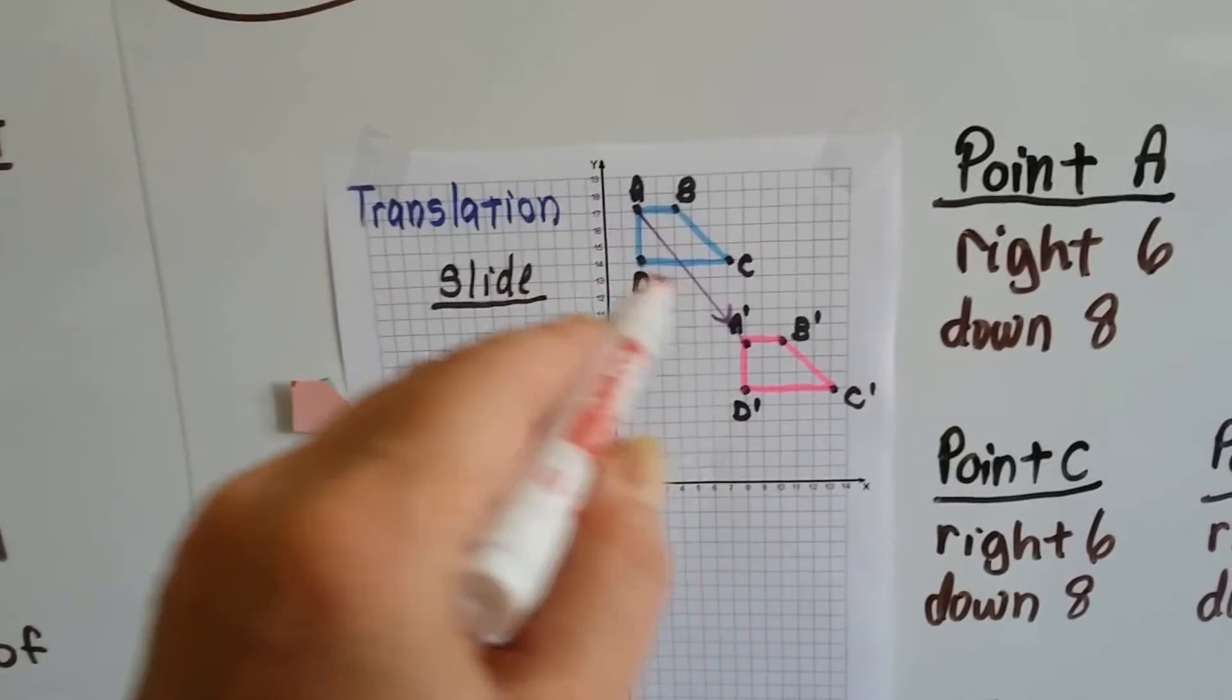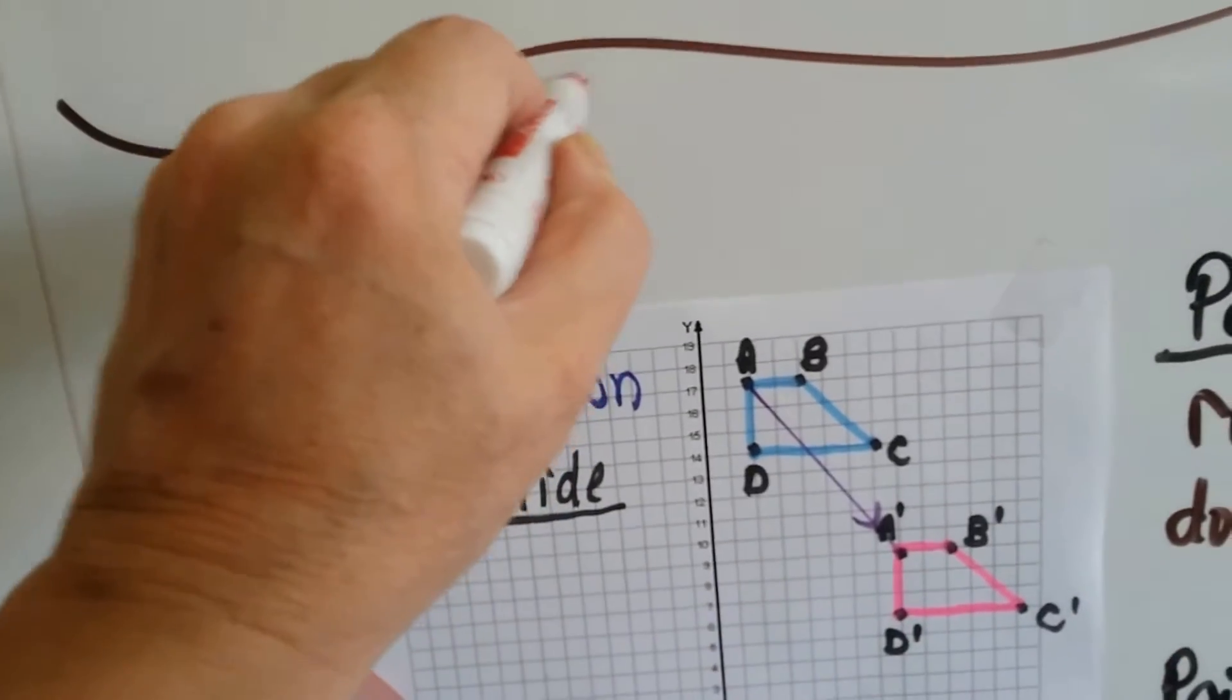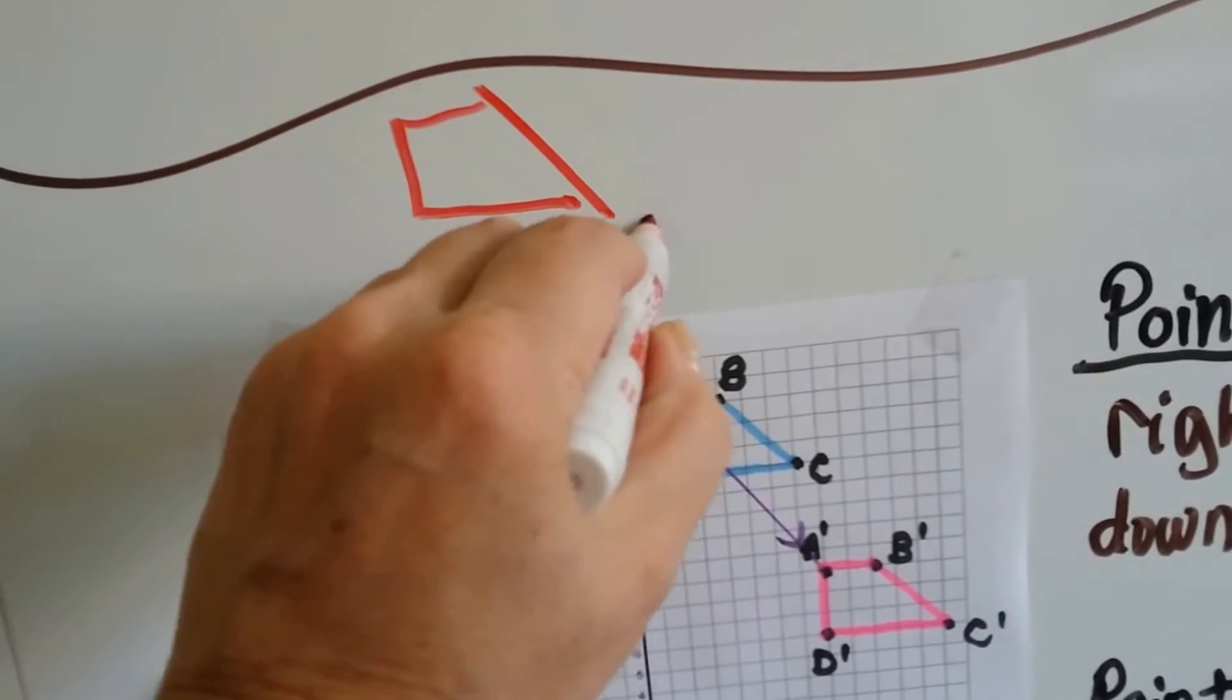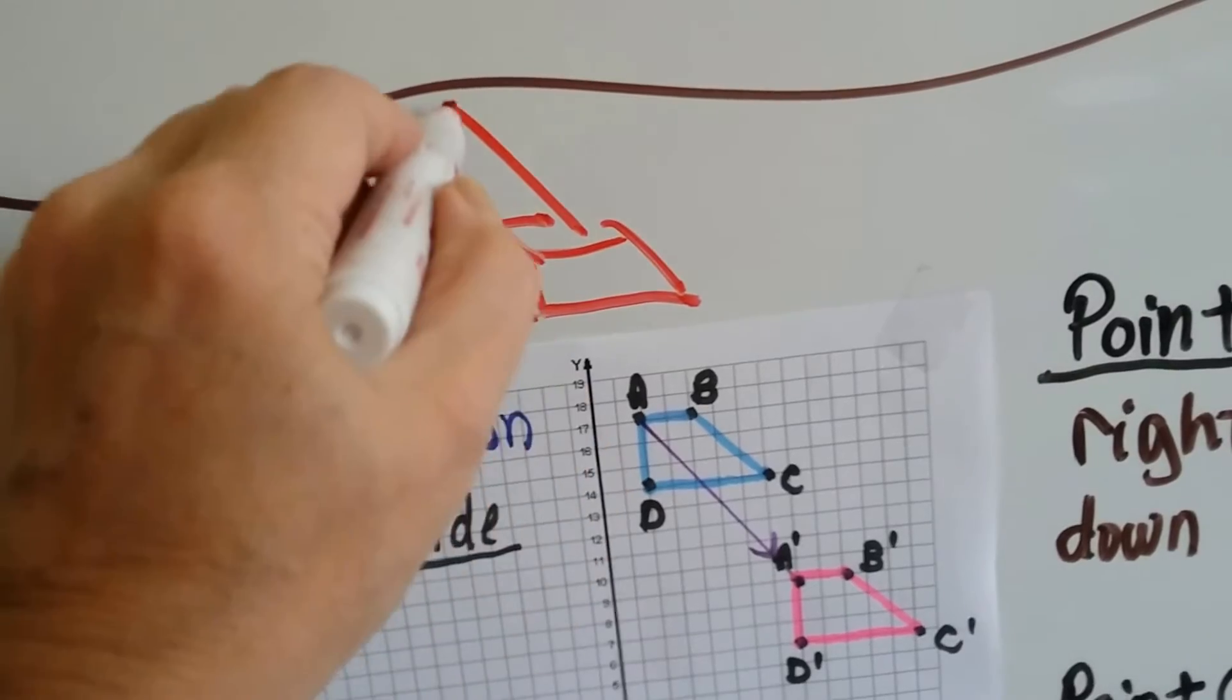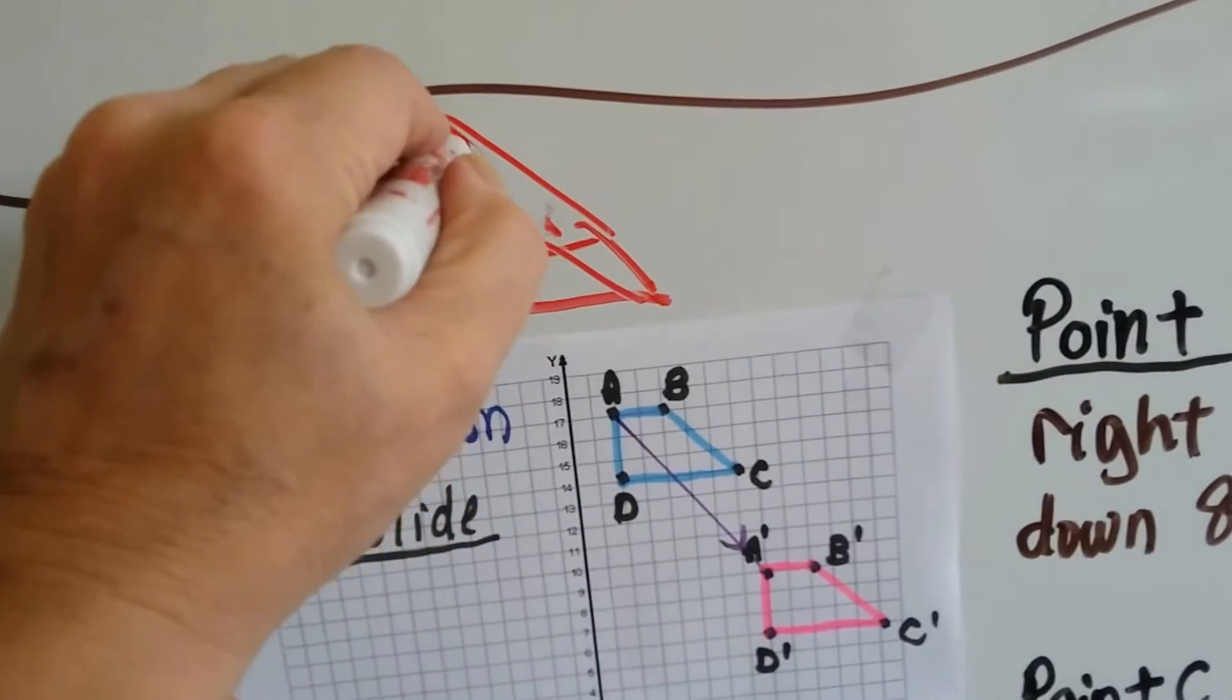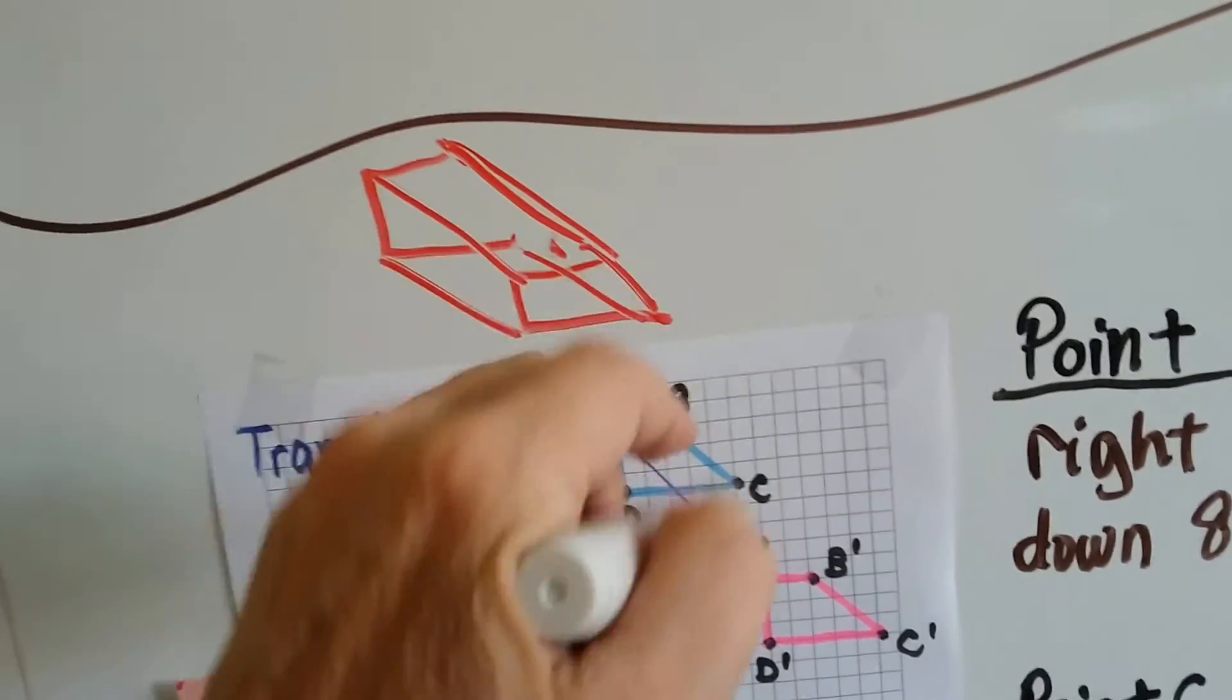Now, if we drew all the lines connecting the vertices, what do you think we'd have? If we drew this like this, I know it's not exact, but look what happens when we connect all the vertices. It kind of makes a 3D shape, doesn't it? It's kind of neat.